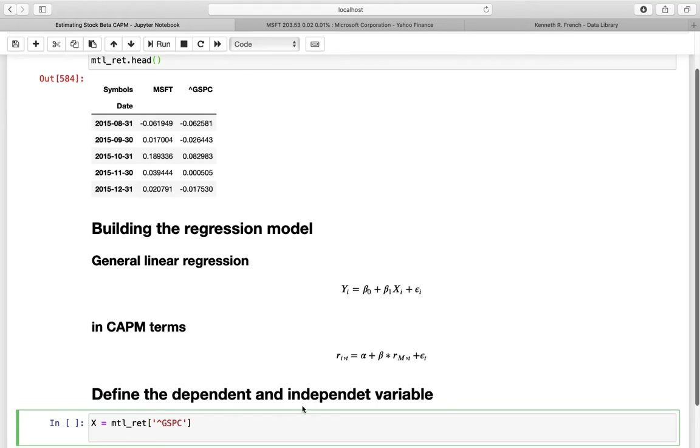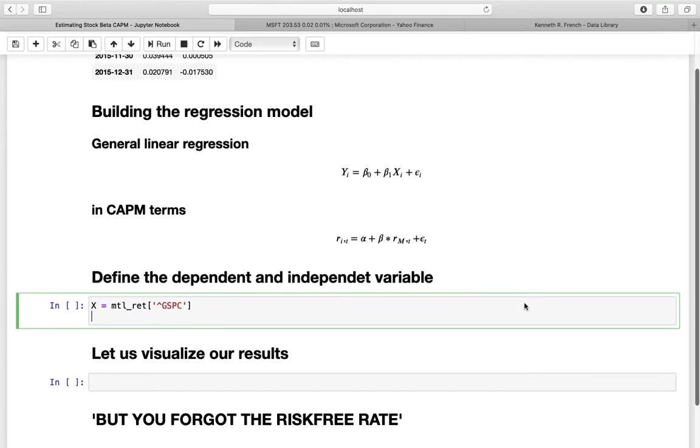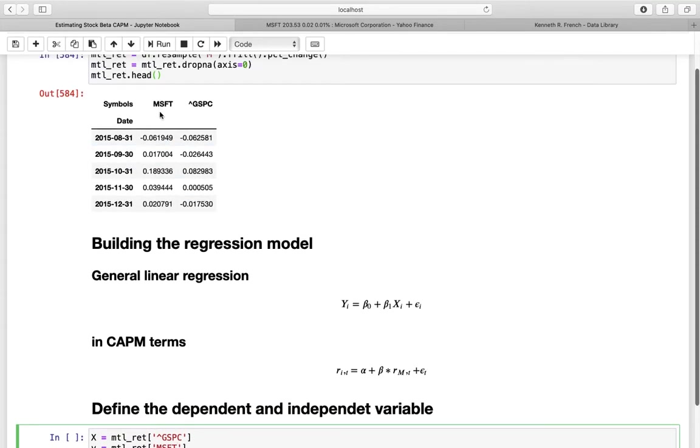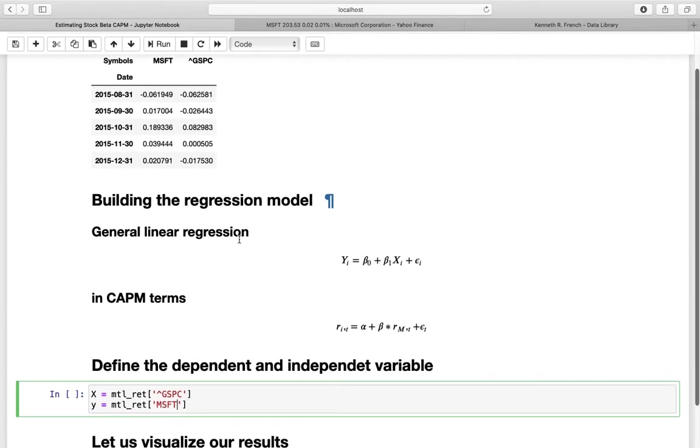And the same holds for our Y variable. So our dependent variable, which is monthly returns, and then, as we see here, the return of the asset, which is the return of Microsoft. So we are just defining MSFT here from our frame above.